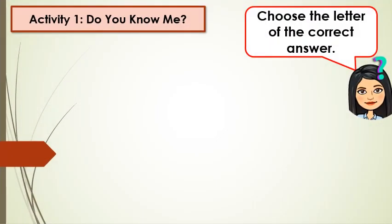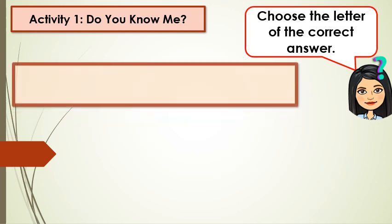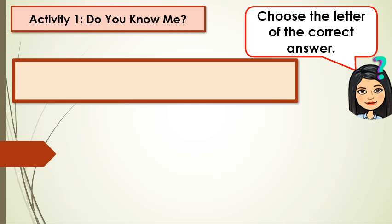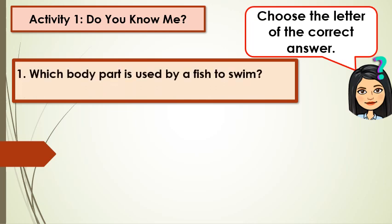Now, let's have some activities. Get your paper and pencil. Activity 1: Do you know me? Choose the letter of the correct answer. Number 1: Which body part is used by a fish to swim? A. Feet, B. Fins, C. Horns, D. Wings.